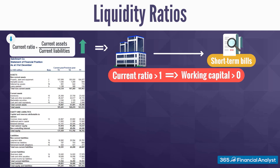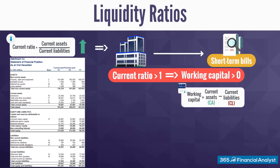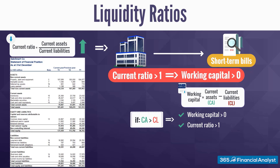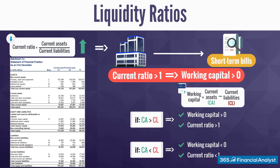Working capital equals total current assets minus total current liabilities. Whenever current assets are higher than current liabilities, we will have positive working capital and a current ratio of more than one. The opposite is also true — when current assets are lower than current liabilities, this leads to negative working capital and a current ratio of less than one. However, this signals insufficient cash only on most occasions, as the current ratio is affected by various types of transactions.